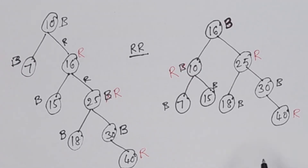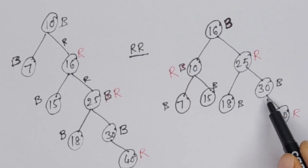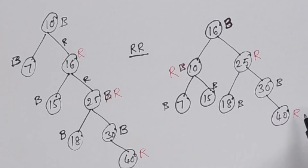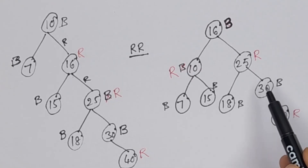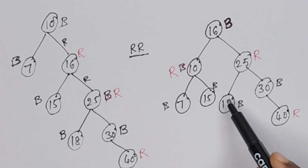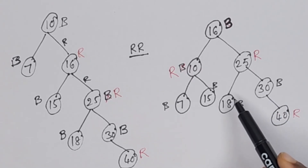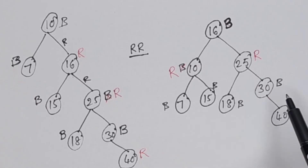This is how we insert elements one by one. The newly inserted node is always red. If the parent is also red, that is a red-red conflict. In that case, check the sibling's color and decide whether to recolor or perform rotation based on the sibling color.